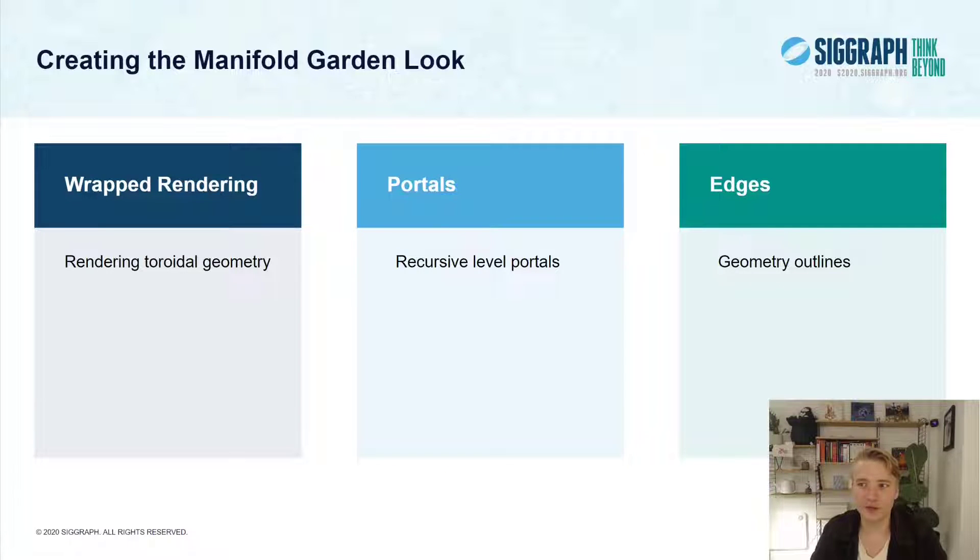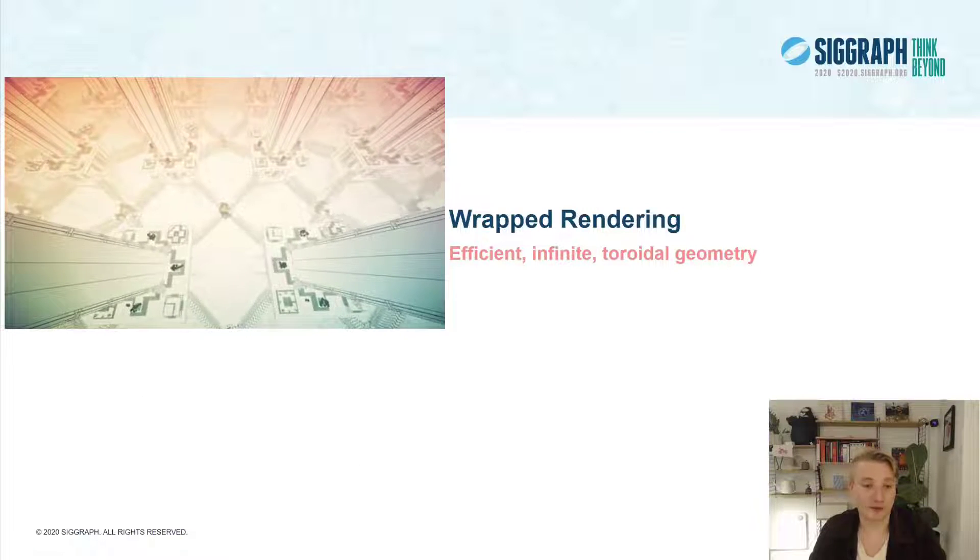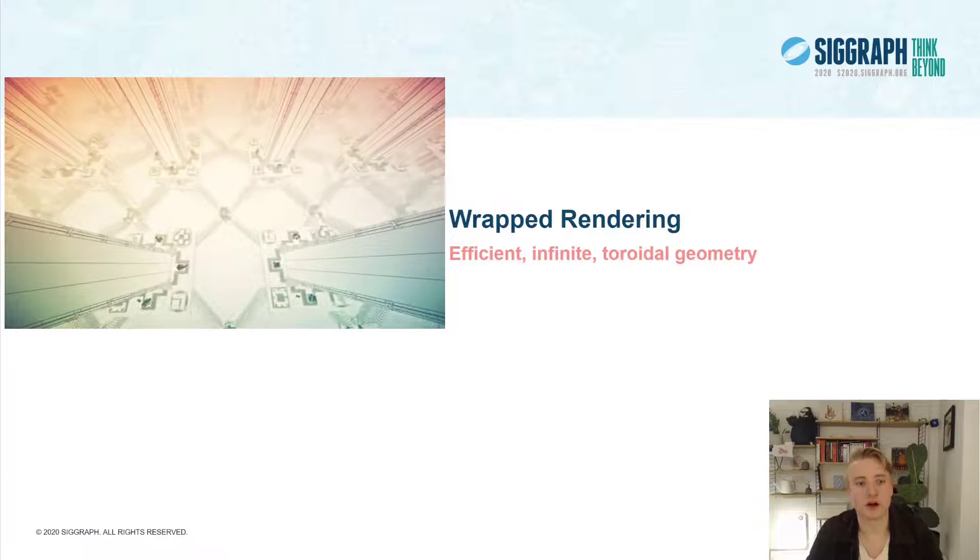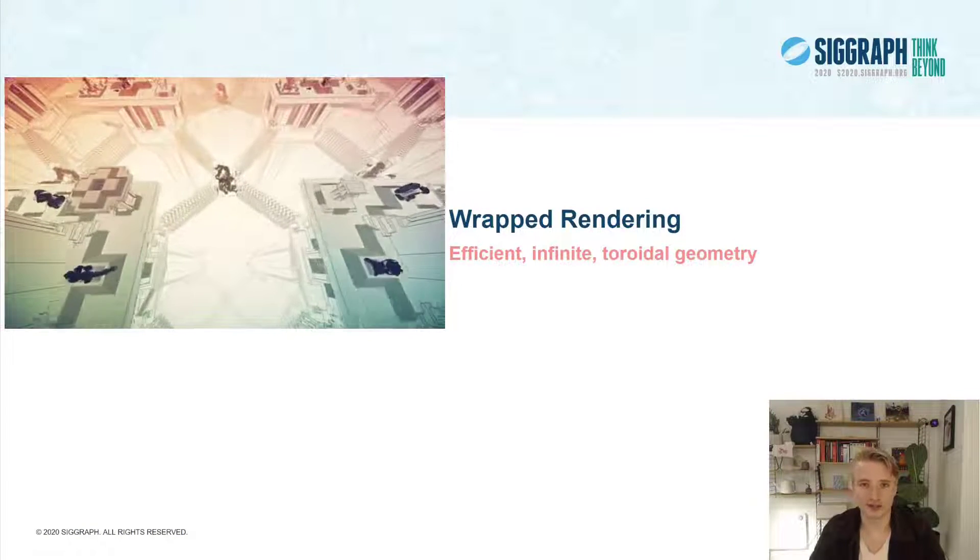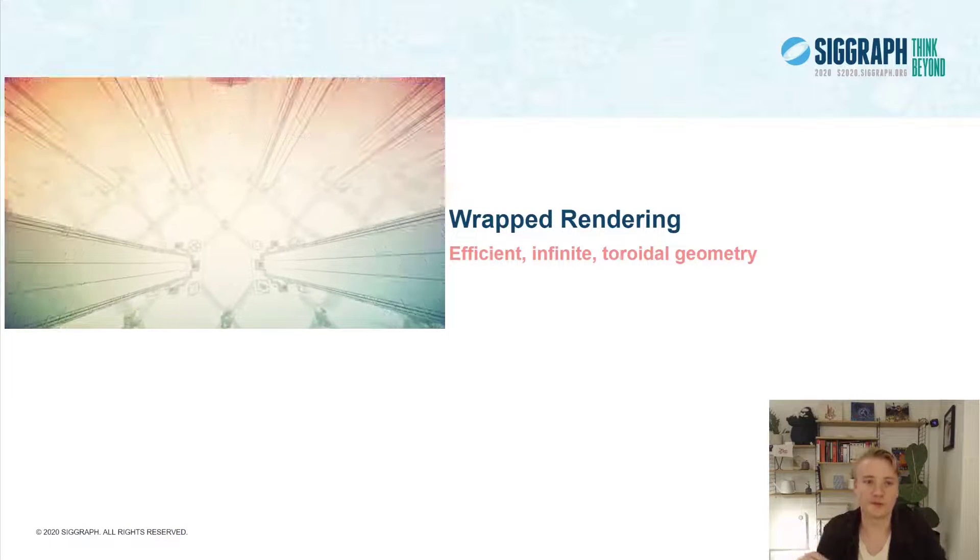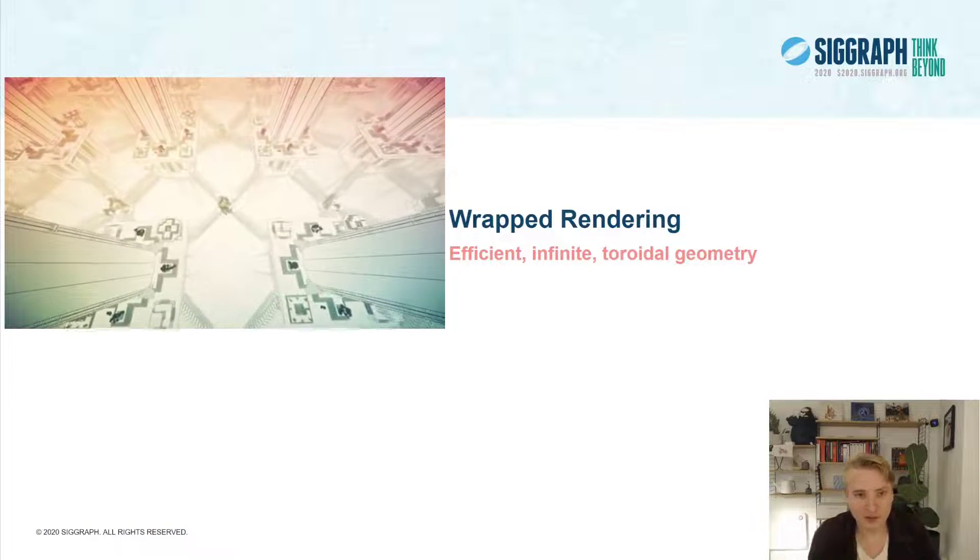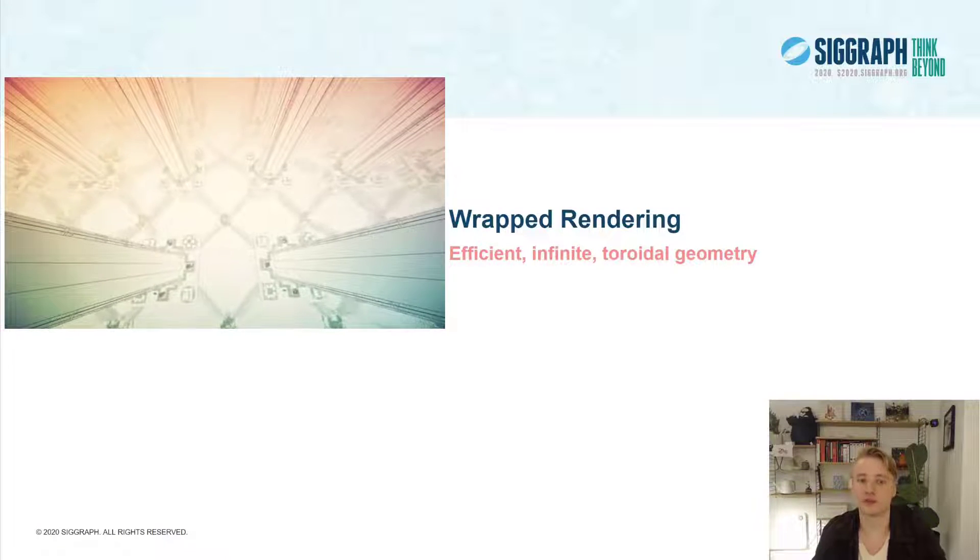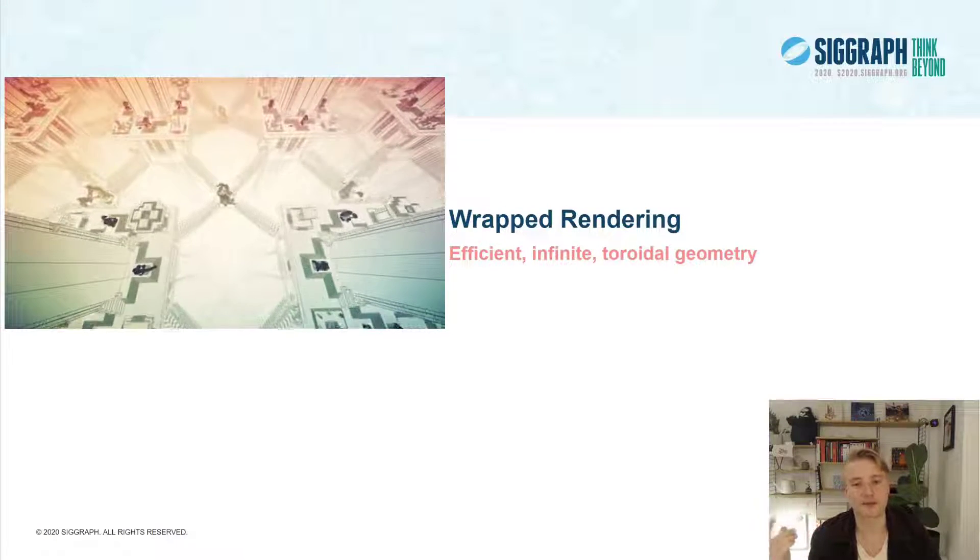There are three main bits I want to go into in this talk. The first being the wrapped rendering. This is a really important gameplay aspect of Manifold Garden—the entire game takes place in so-called toroidal geometry. That is to say, there are boundary conditions and when you fall off the end of the level, you'll start right back at the top again.